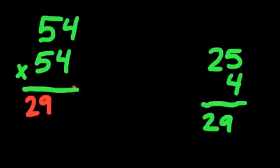To get the last two digits, you multiply 4 times 4 together, which is 16. So the answer to 54 times 54 is 2916.